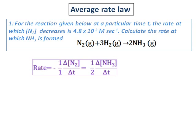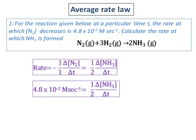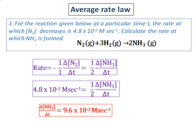The average rate law for this reaction: the reactant is nitrogen and they have asked for ammonia. So it will be 1 over 1 times the change in concentration of nitrogen divided by delta T, and that rate is equal to the rate at which ammonia is formed, which is one half times the change in concentration of ammonia divided by delta T.